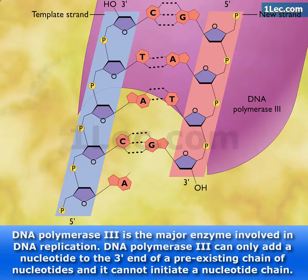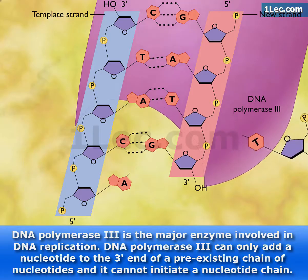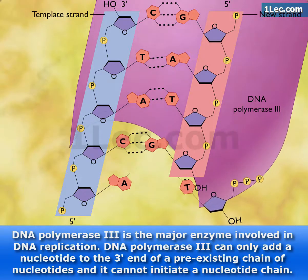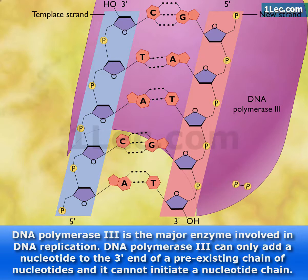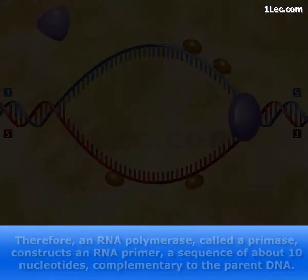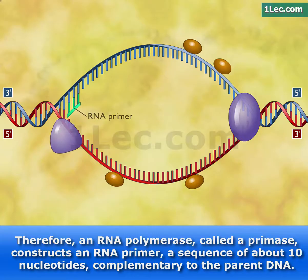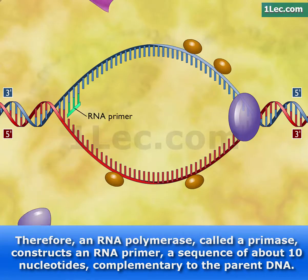DNA polymerase 3 is the major enzyme involved in DNA replication. DNA polymerase 3 can only add a nucleotide to the 3' end of a pre-existing chain of nucleotides and it cannot initiate a nucleotide chain. Therefore, an RNA polymerase, called a primase, constructs an RNA primer, a sequence of about 10 nucleotides, complementary to the parent DNA.